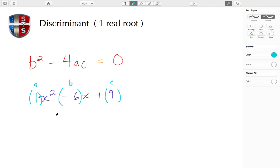Now we're going to substitute these values into the discriminant. So b² is going to be (-6)² minus 4 times a, which is 1, times c, which is 9. So here I have (-6)² which is 36.